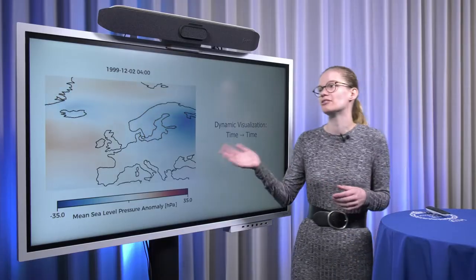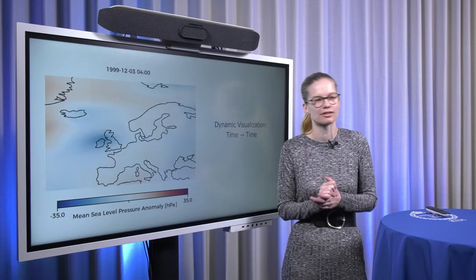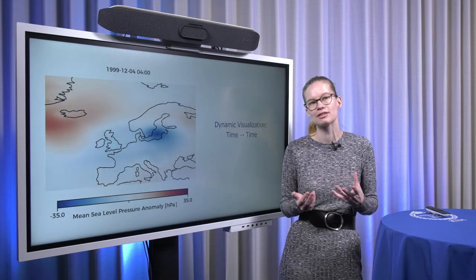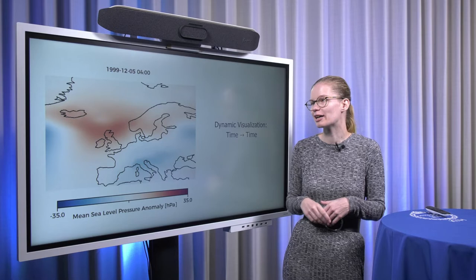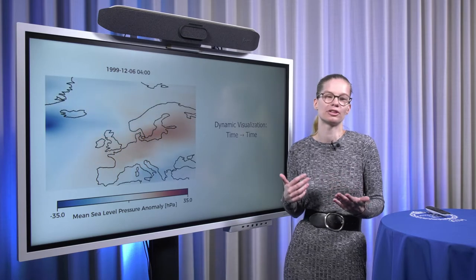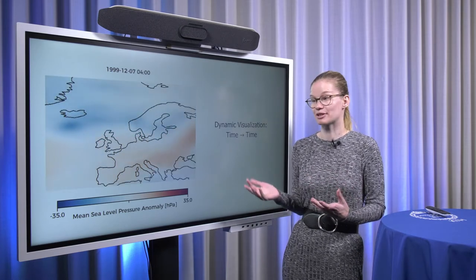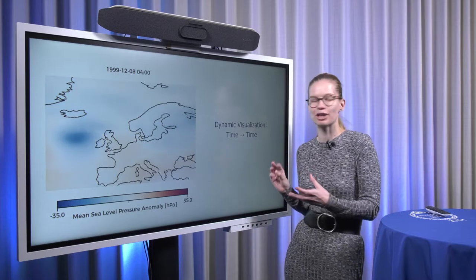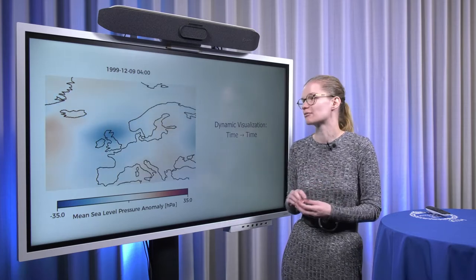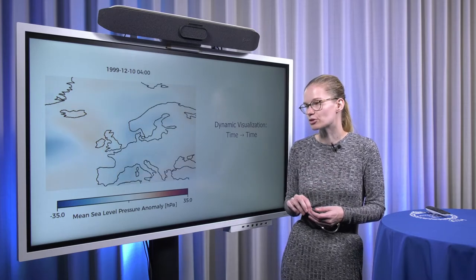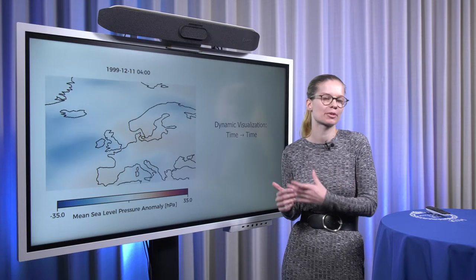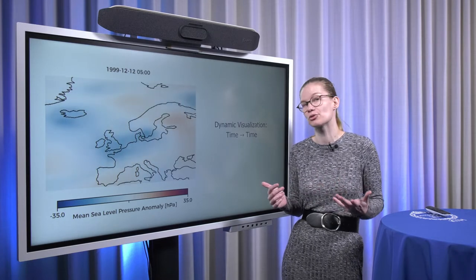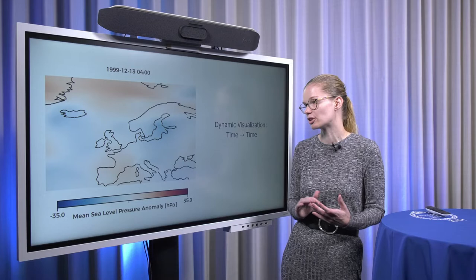We can see an example for that here. This is a scalar field that essentially represents storm activity over Europe by capturing the pressure anomaly over Europe during that time. Blue areas or dark blue areas correspond to either strong storms or some kind of weather phenomena that is associated with a low pressure anomaly.